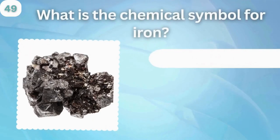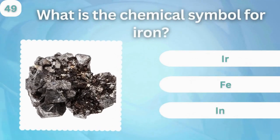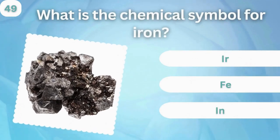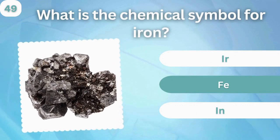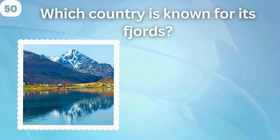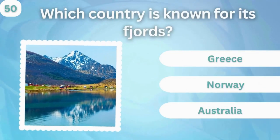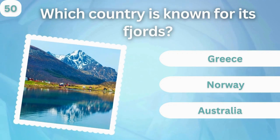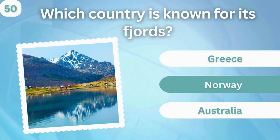What is the chemical symbol for iron? Ir, Fe, or In? Fe. Which country is known for its fjords? Greece, Norway, or Australia? Norway.